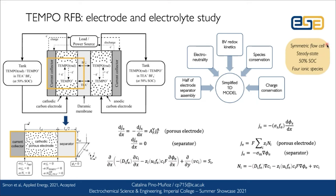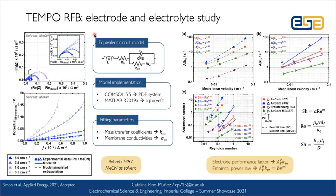For the macroscale model, we develop a simplified 1D representation of only half of the cell because we have a symmetric setup. We include conventional PDEs for conservation of charge and species in the system, and details can be found in the upcoming publication. We tested the system in steady state for a 50% state of charge, which was the condition used in all experimental tests. Once the model was implemented, we calibrated it against the polarization at different flow conditions — for all four electrodes and two solvent conditions — using equivalent circuit model fitting to obtain membrane conductivity and system resistance.